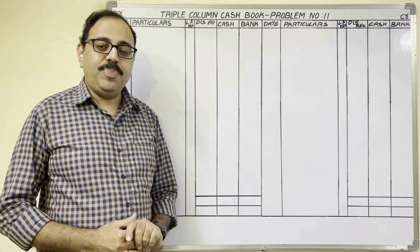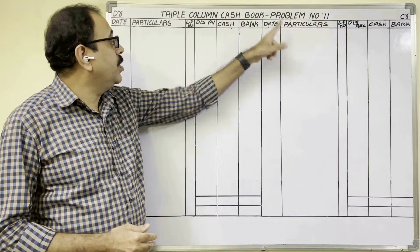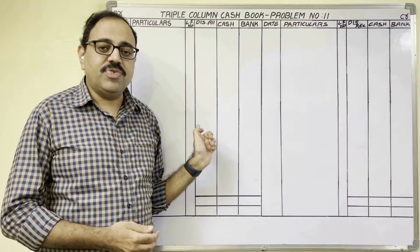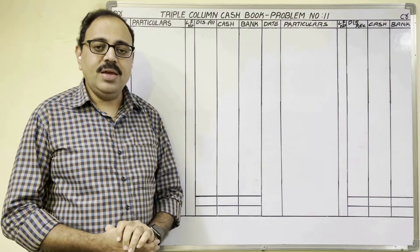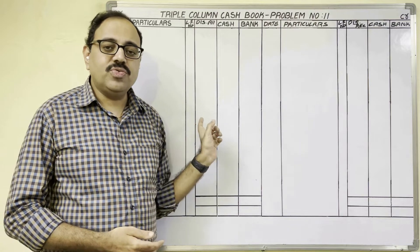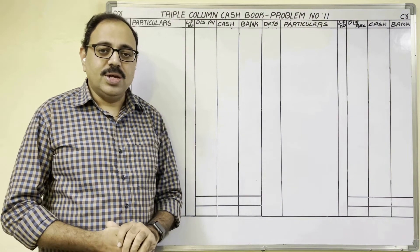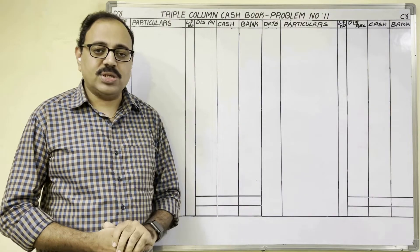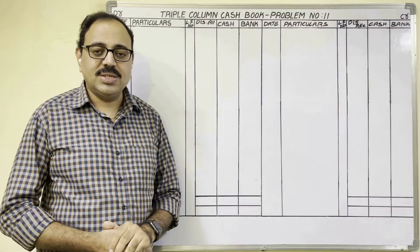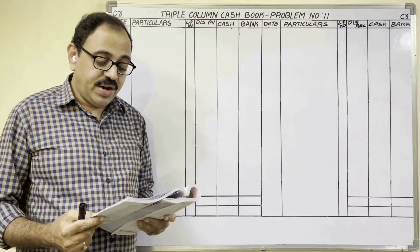Hello students. In this video I am going to explain about the 11th problem from the Triple Column Cash Book chapter. I am taking this question from Telangana State Telugu Academy inter first year accountancy textbook, but this video is useful to all commerce students who want to know about this topic. The question is available in the description box, and previous video links are also available there. Let us start the problem: prepare a three column cash book of Ravit Traders from the following particulars.